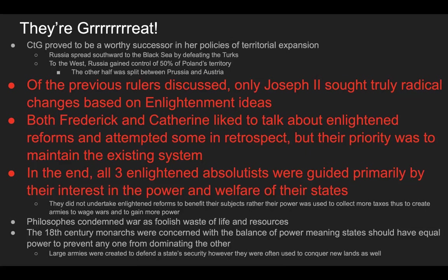Of the rulers discussed, only Joseph II sought truly radical changes based on Enlightenment ideas, which is why he is known as the most radical enlightened despot — 'despot' meaning one who holds unlimited power. Both Frederick and Catherine liked to talk about enlightened reforms and attempted some, but their priority was to maintain the existing system. Catherine especially needed stability, as Russia had gone through six rulers in about 20 years — a deeply unstable situation.